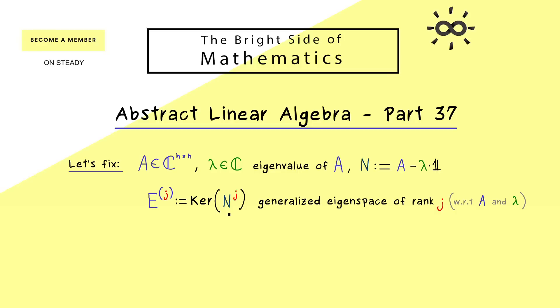These are the subspaces we will talk about in this video. More concretely, we will talk about the dimensions we can have for these generalized eigenspaces. Equivalently, we could also talk about the range of N^j because the dimensions are connected by the rank-nullity theorem. In that sense, let's also introduce a capital R to denote these subspaces given by the range. Maybe here as a reminder, j can be any natural number and also zero.